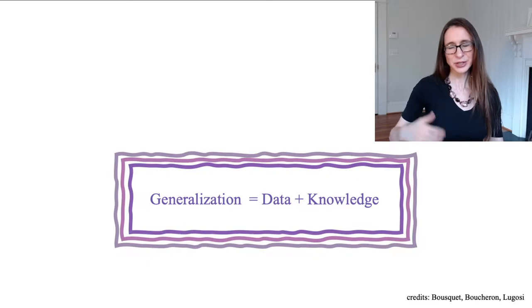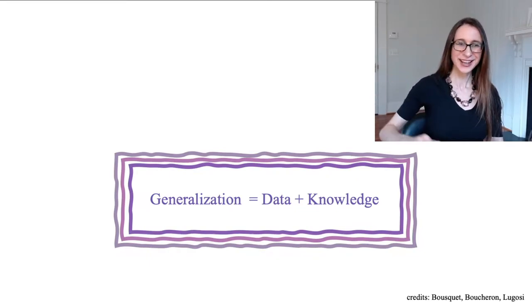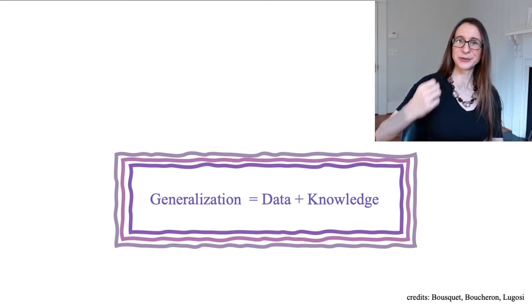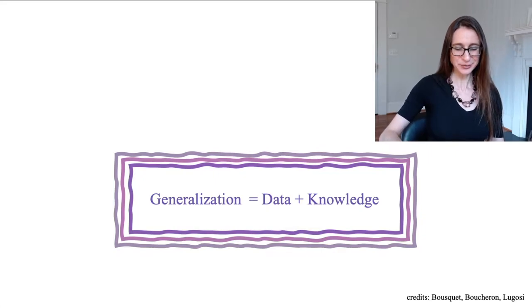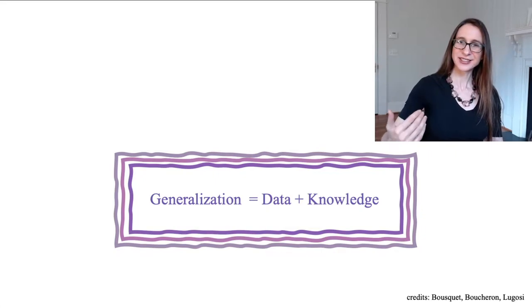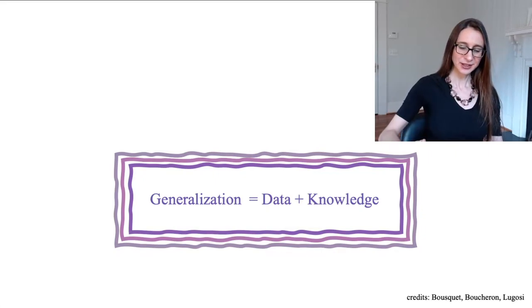The VC dimension is a beautiful combinatorial quantity, and it was part of the reason I was inspired to go into machine learning. We're going to make concrete via proof this philosophical argument that somehow learning needs simplicity.